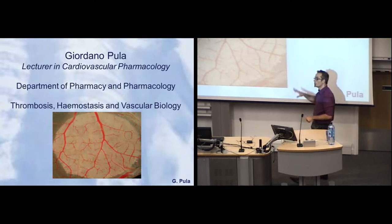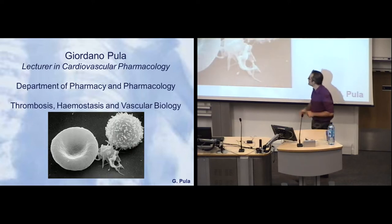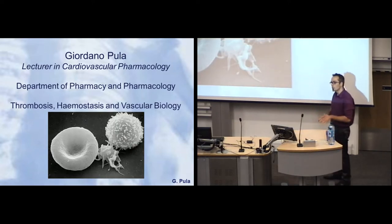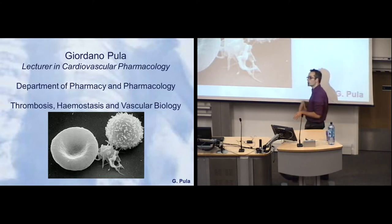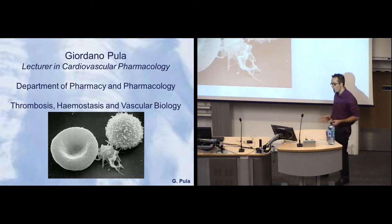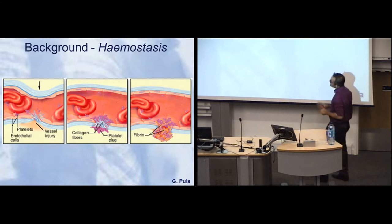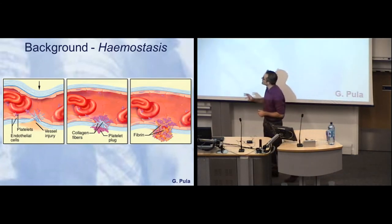Platelets, shown here in this picture, are small cells without a nucleus which are continuously released by the bone marrow into the bloodstream, where they remain for seven to ten days before being eliminated. Their role in the bloodstream is to patrol the blood vessels.